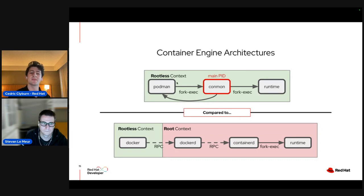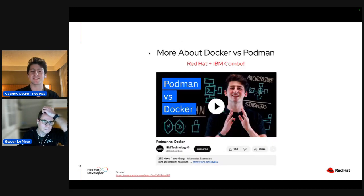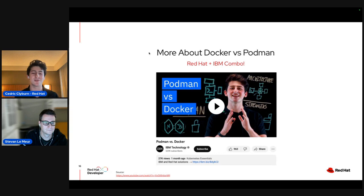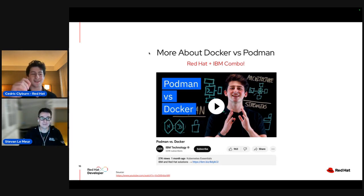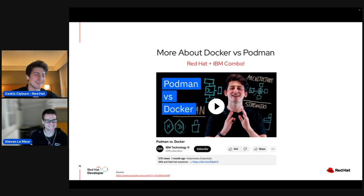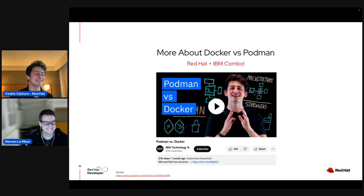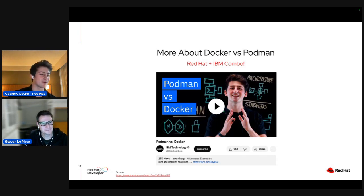If a container broke out of Docker's root daemon, it could run as root — a big security implication. You can run Docker in a rootless fashion but you lose some functionality. Podman's big advantage is it runs rootless by default. There's a really cool video on IBM Technology's channel covering more of these differences — definitely recommend checking it out.